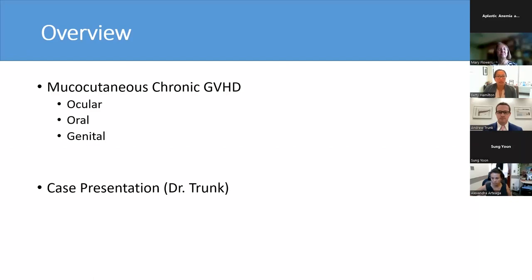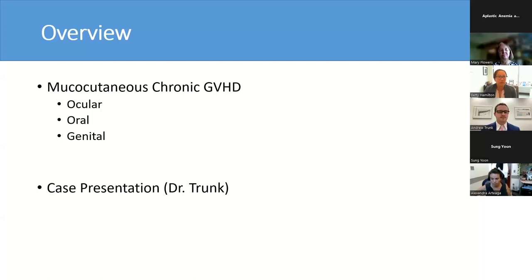Specifically, I'm going to be going over signs, symptoms, how to screen, diagnose, and manage ocular graft-versus-host disease, oral GVHD, and genital GVHD. Other manifestations of GVHD, such as skin and other highly morbid forms like lungs, will be covered in other sessions in the future. In the second half of this session, Dr. Trunk, one of our hematology oncology fellows here at the Cleveland Clinic, will be presenting a case and we'll discuss our approaches to diagnosis and management of mucocutaneous GVHD.